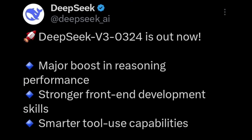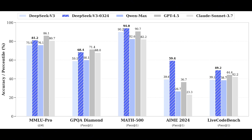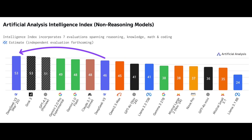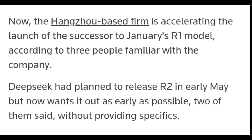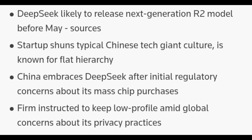DeepSeek has just released a new version of DeepSeek V3, which has a major boost in performance compared to the old V3. In AIME 2024, it scored 59.4 — almost 20 more points than the old DeepSeek V3. It also outperforms other models like the latest OpenAI model GPT-4.5. The new DeepSeek V3 is currently the number one non-reasoning model you can use right now. To use the new model, make sure to turn off DeepThink mode on the DeepSeek website or app. Some people say the new V3 is the base model for the coming DeepSeek R2, which Reuters reports will be released in early May — less than a month away. I'll put the article in the description box.